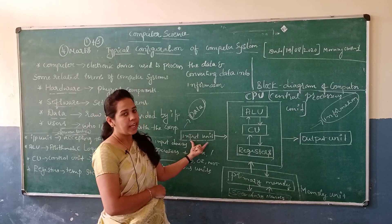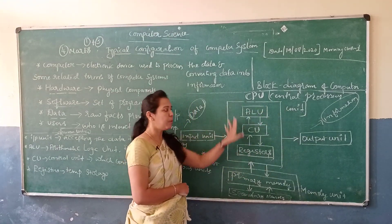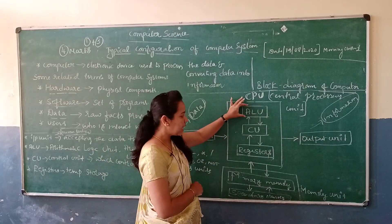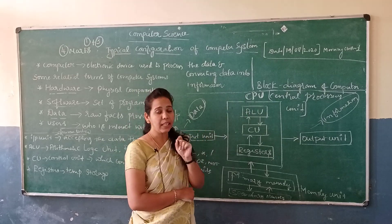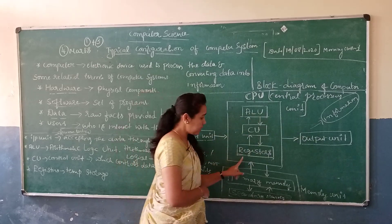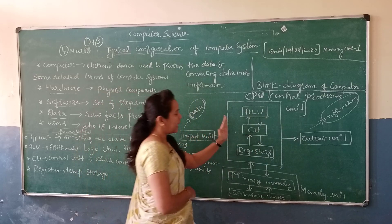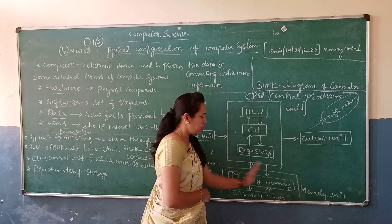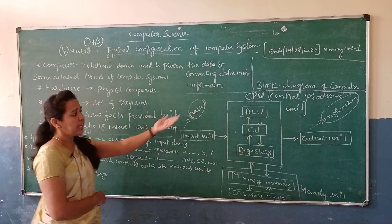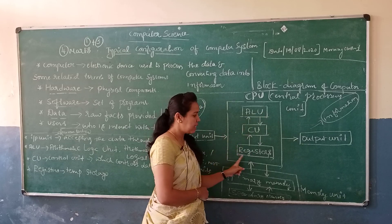After the input unit, the data will go to the CPU — the central processing unit. The central processing unit is divided into three parts. The first one is ALU — Arithmetic Logic Unit. Next is CU — Control Unit. Next is registers. After accepting the data, it will be transferred to the central processing unit, which has these three sub-units.